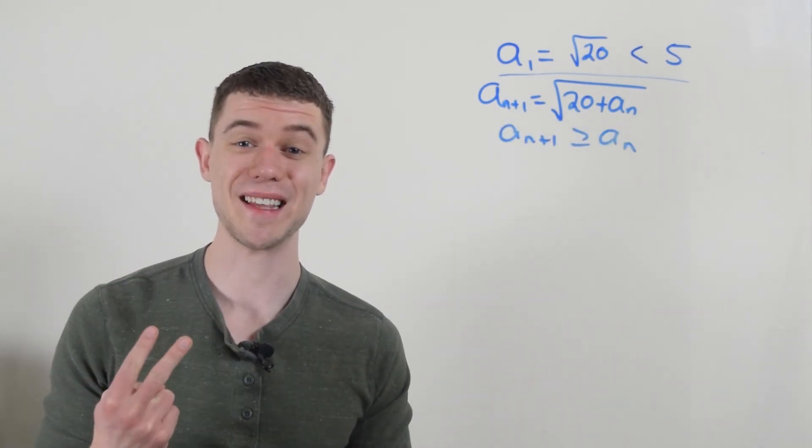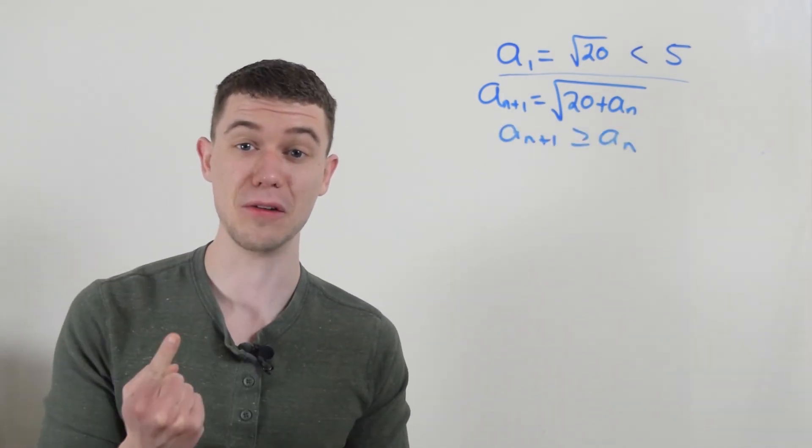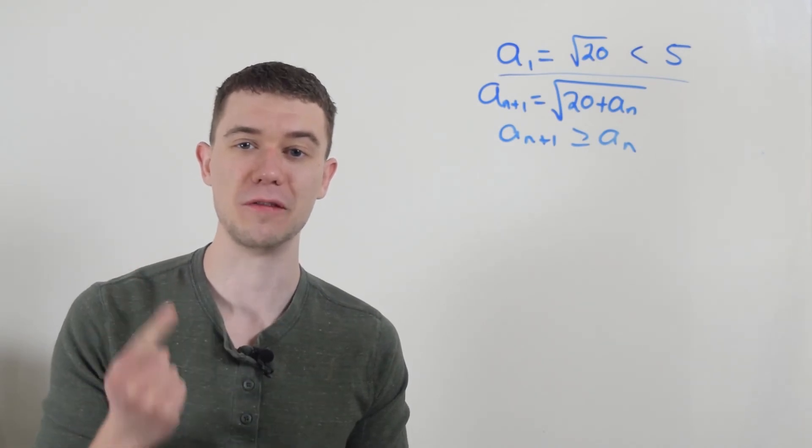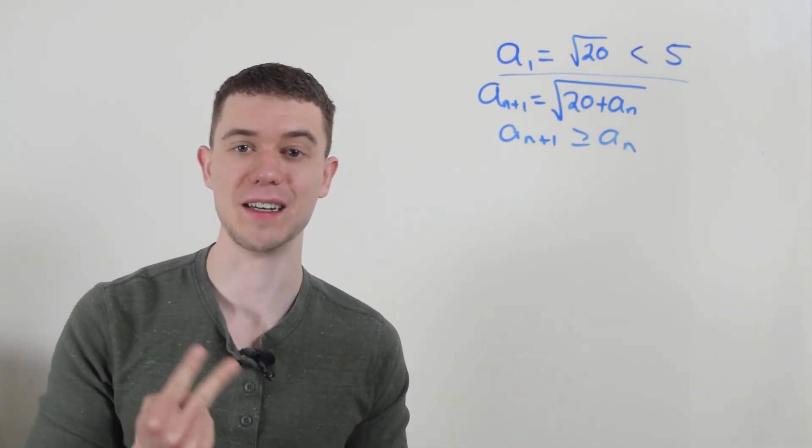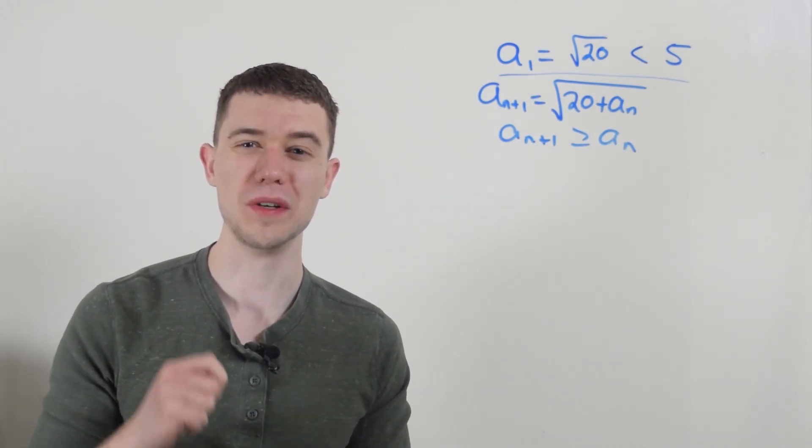Okay, I've shown the two things that I need to show, I needed to show it was bounded. Every term is bounded above by five. And I needed to show the sequence was monotonic. In this case, it's always increasing. A bounded monotonic sequence always converges.